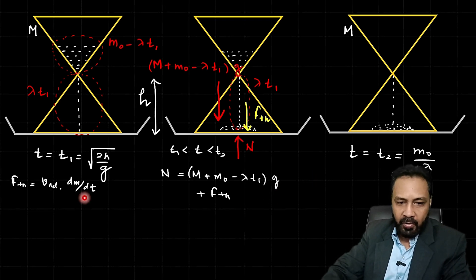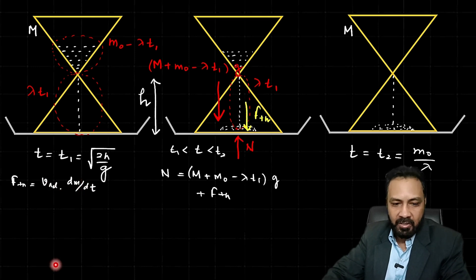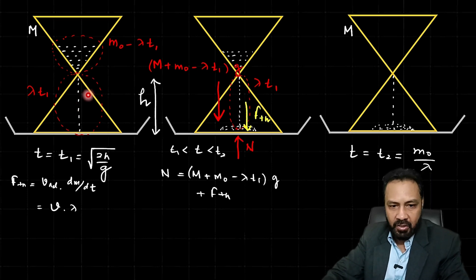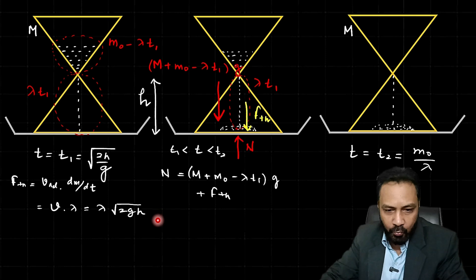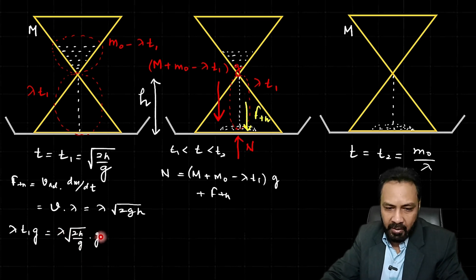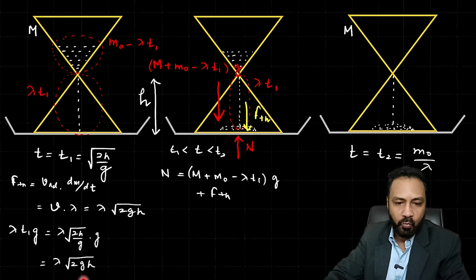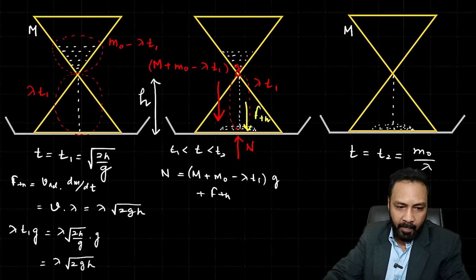The thrust force formula is f_thrust = v_relative × dm/dt. The sand grain enters the pile with velocity v relative to the floor, so v_relative = v, and dm/dt = λ. Thus f_thrust = λv. Since the grains fall from height h under gravity, their velocity just before impact is v = √(2gh), so f_thrust = λ√(2gh). We also note that λt₁g = λ × √(2h/g) × g = λ√(2gh), so f_thrust = λt₁g.